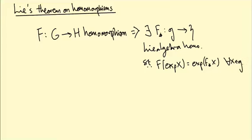Today I want to ask the question: what about the other direction? If I'm given a Lie algebra homomorphism between little g and little h, do I get a big F, a homomorphism from G to H defined by this equation?